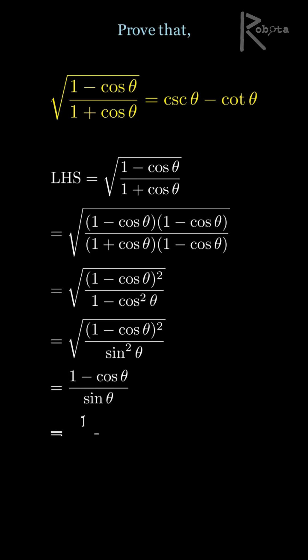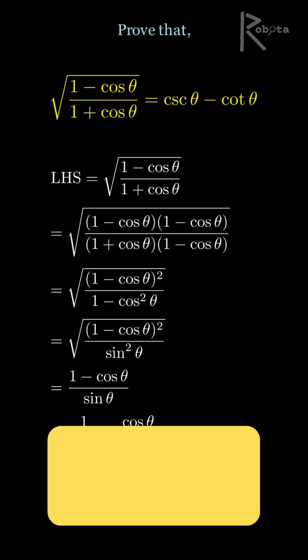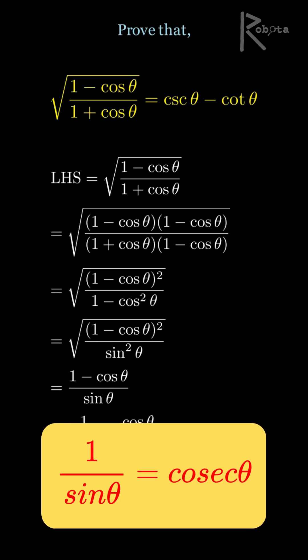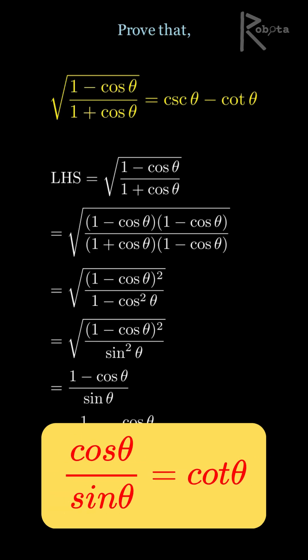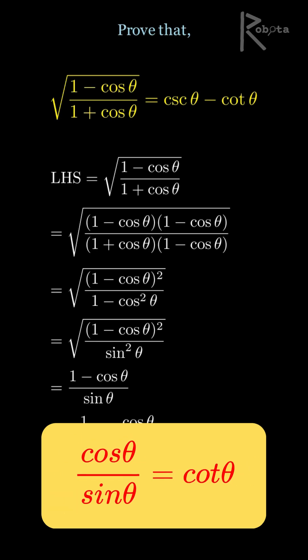Now we separate the fraction into two parts: 1 over sine theta minus cosine theta over sine theta. 1 over sine theta is the definition of cosec theta. Cosine theta over sine theta is the definition of cot theta.